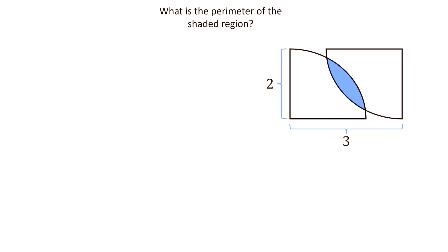The question is: we have two quarter circles with radius 2 and this length is 3. What is the perimeter of this shaded region? How can we solve this?